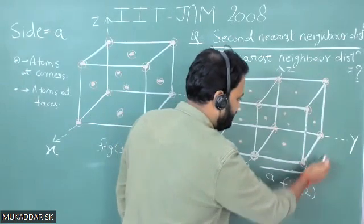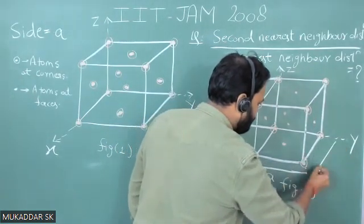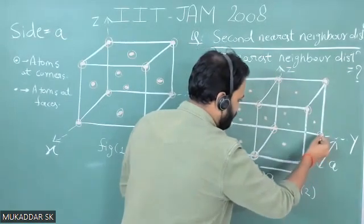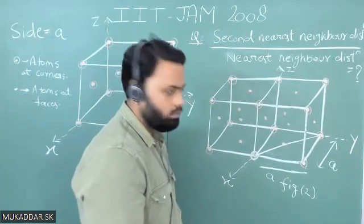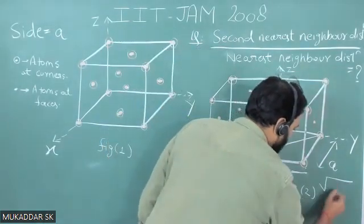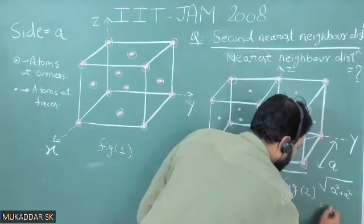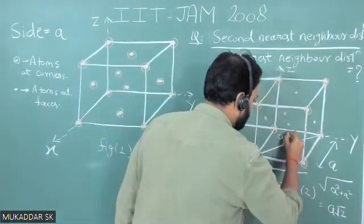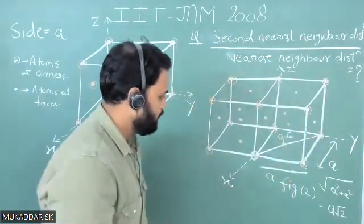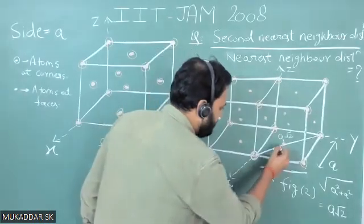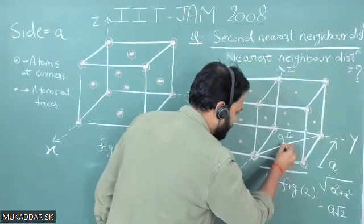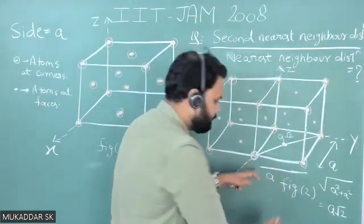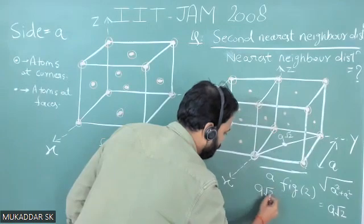If this distance is a, then the adjacent side is also a. By the Pythagorean theorem, the face diagonal distance is √(a² + a²) = a√2. The sphere present at the center of the face is at half this face diagonal distance, which is a√2 / 2 = a / √2.